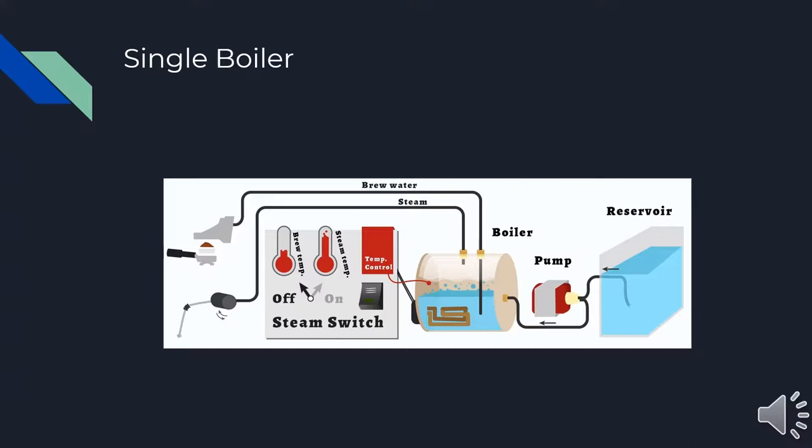In the figure depicted here on this slide, the design of a single boiler is illustrated. From the reservoir, a pump moves water into the boiler. The user first sets the boiler to the steaming mode to steam the milk. Following this, the boiler is cooled to the brewing temperature and the water is sent through the group head to make the brewed espresso. The steamed milk is added afterward as the final step required for making the espresso.